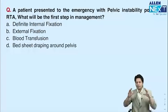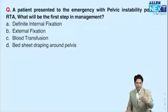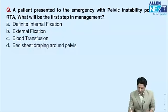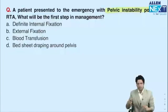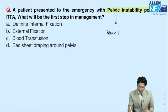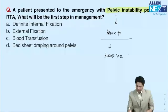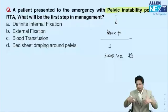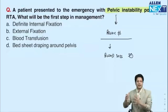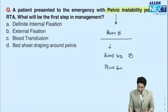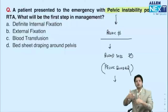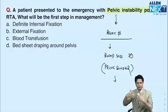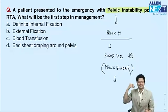Next question: initial management of a patient presenting with pelvic fracture. Before definitive management, you must stabilize the patient. Pelvic fracture causes massive blood loss — up to three units of blood. To limit this blood loss, external stabilization must be done as early as possible using a pelvic binder. Then compensate for blood loss through transfusion of blood and crystalloid fluids.